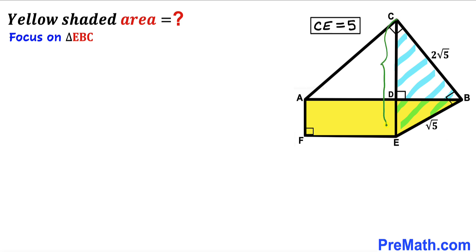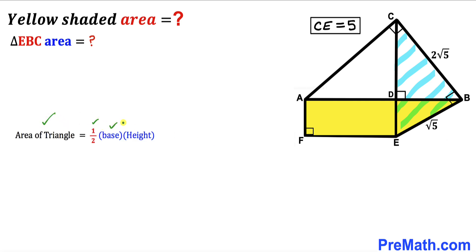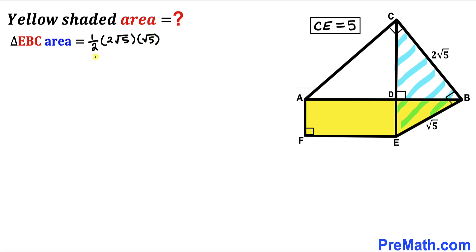Now let's calculate the area of triangle EBC. Using the area formula — area equals one half times base times height — our base is 2 times square root of 5 and our height is square root of 5. So the area equals square root of 5 times square root of 5, which gives us 5. Therefore the area of triangle EBC is 5 square units.